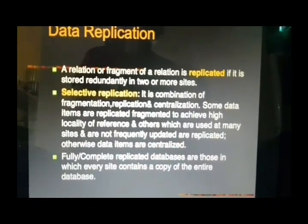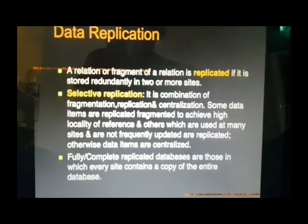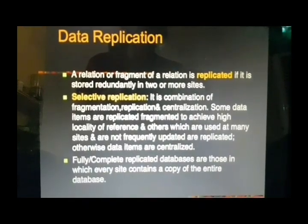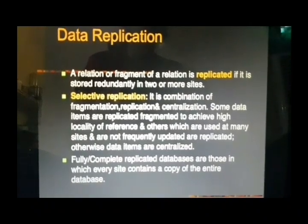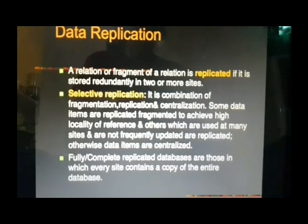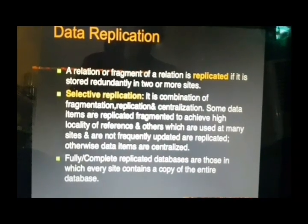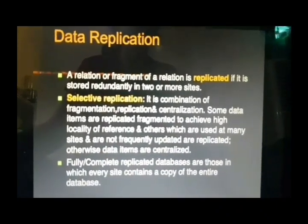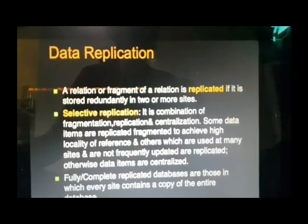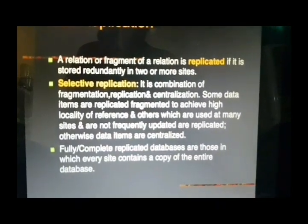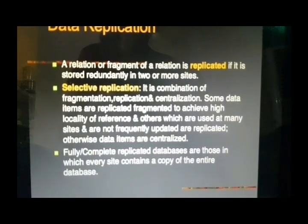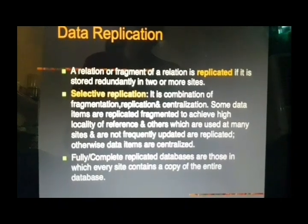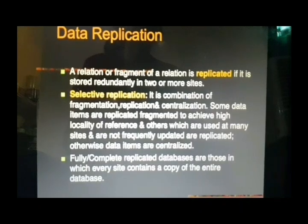For example, suppose we need department CSC data. In our university databases, we have data of all students — it may be mechanical, automobile, or anything. But at a particular site, we need all data of CSC students only. So we perform horizontal fragmentation which selects the rows: SELECT * FROM table_name WHERE department = 'CSC'. Only the data of the CSC department will be stored in that horizontal fragment, and that horizontal fragment will be replicated at the site wherever needed. Another site may need data of mechanical engineering, so we create one more horizontal fragment for the mechanical engineering students, and their data is stored at the site wherever it is needed.